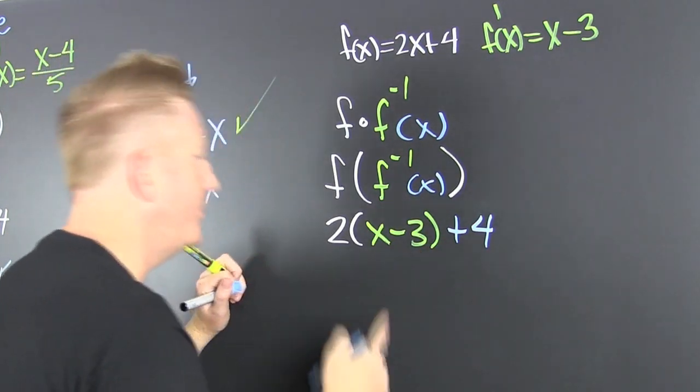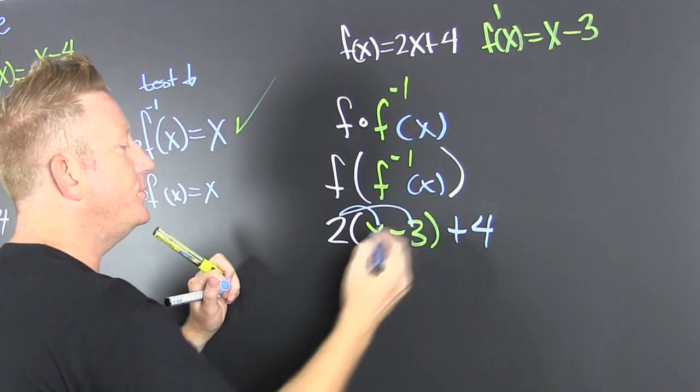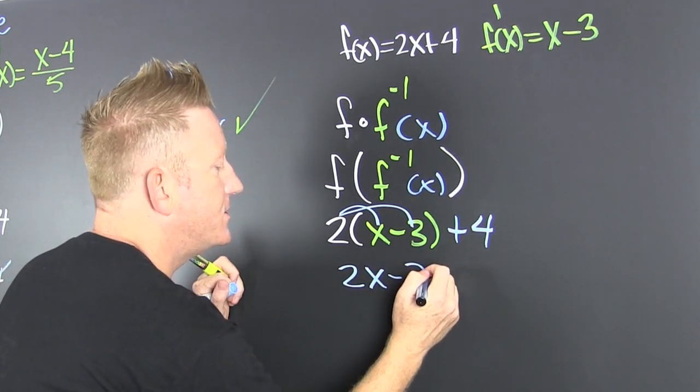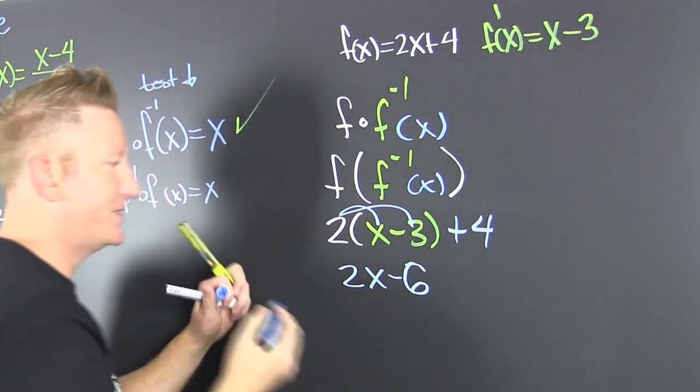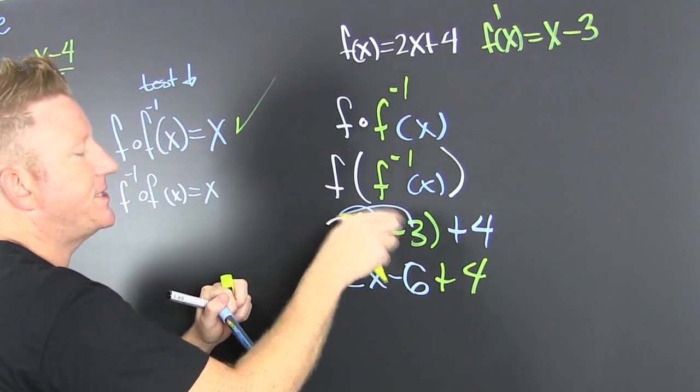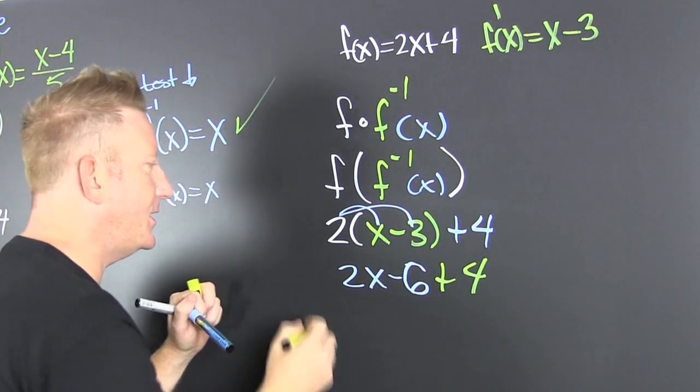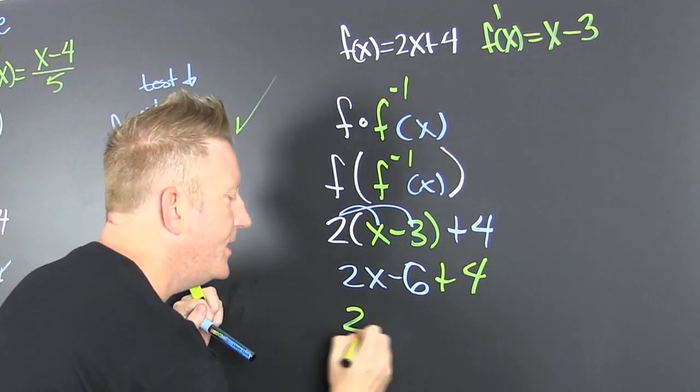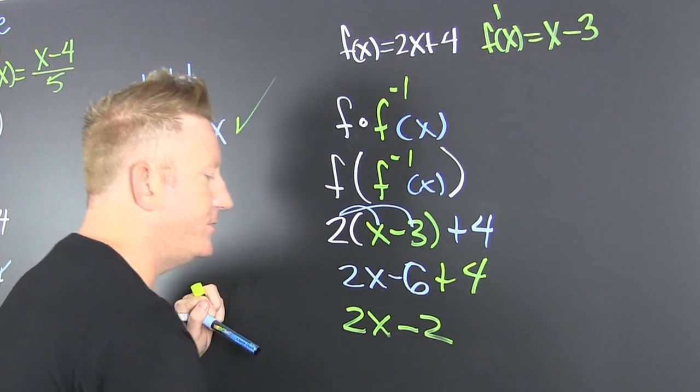So now that's a 2x minus, almost got me, 6, add 4 to it 'cause I distributed in there. Now I'm gonna gather, collect, and combine. That's a 2x minus 2.